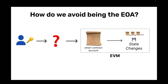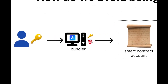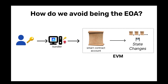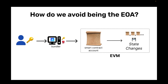So how do we avoid being the externally owned account as a user if we don't want to hold gas in our account or sign transactions directly? What we do is introduce a relayer — in this case labeled as the bundler, and we'll talk about why it's called a bundler in the next video. Alchemy has produced its own bundler called the Rundler, which is an open-source technology used to relay these transactions to the smart contract account. The user signs off on an operation, and then the bundler is actually the one that signs the transaction and submits it on-chain to the smart contract account.